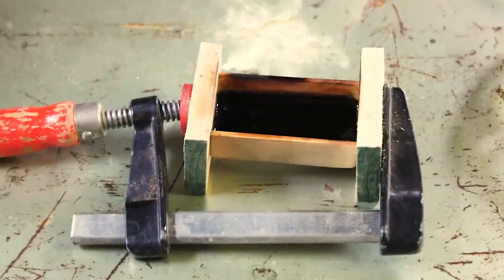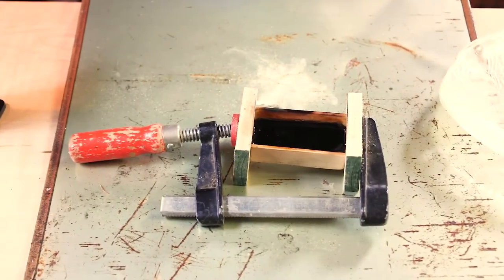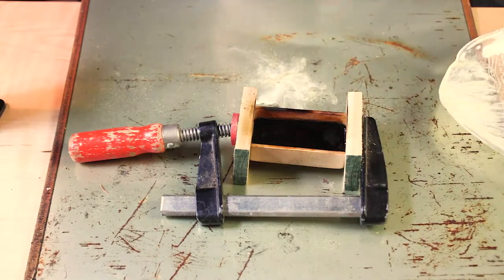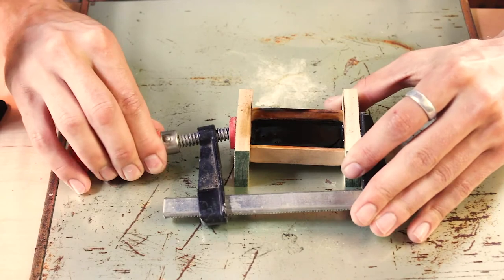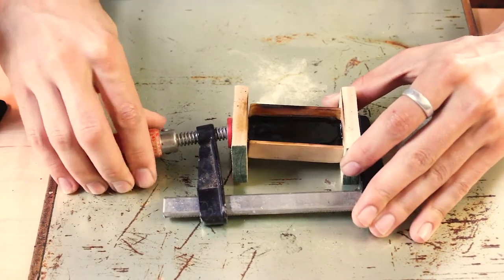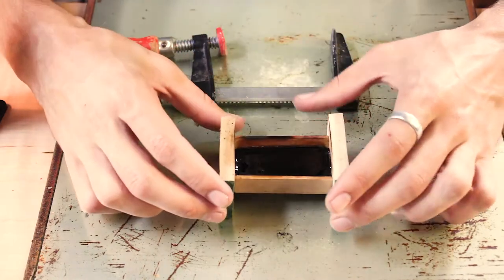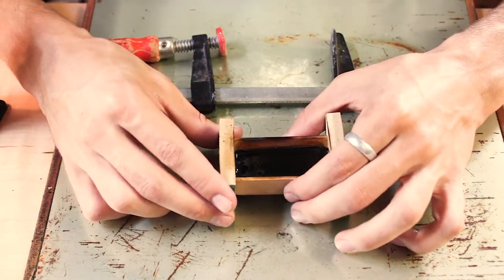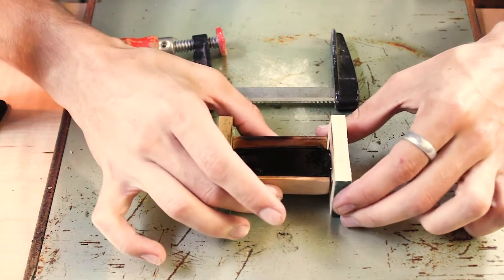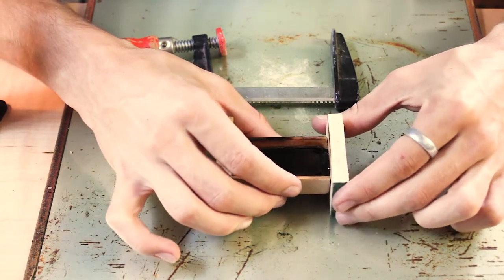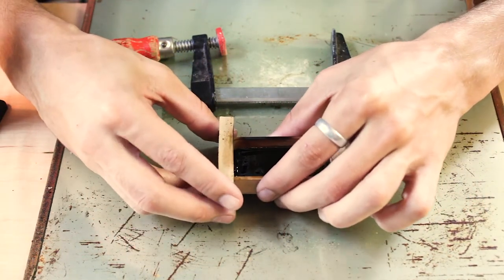Now, we're going to do the tricky part of taking off the clamp because what we don't want to do is wait too long where it hardens completely and then it breaks when we take off the clamp. But also, we don't want it to run. So we want it to be in that nice sticky place where it's going to stay but it's not going to run. Now, as you can see, as I pull it, it's trying to follow me because it's still too hot. So I'm just going to try to work it and break it off where it needs to be.